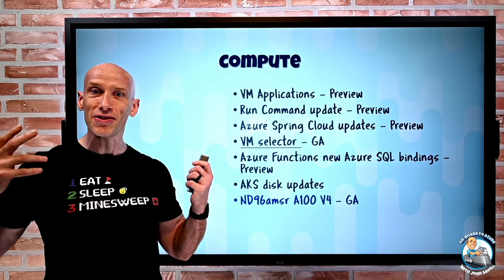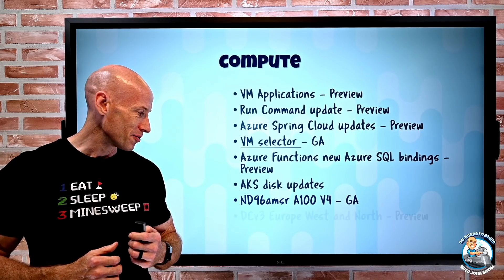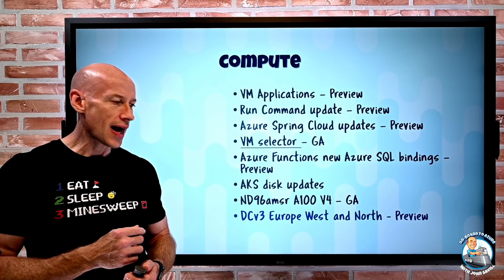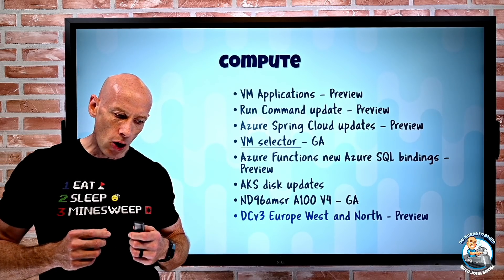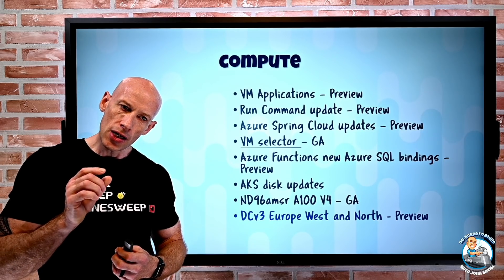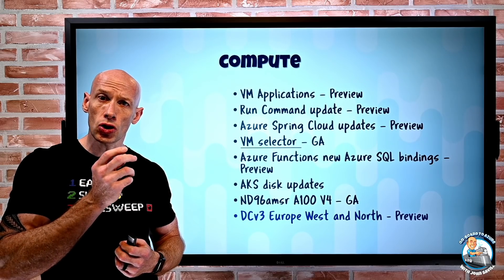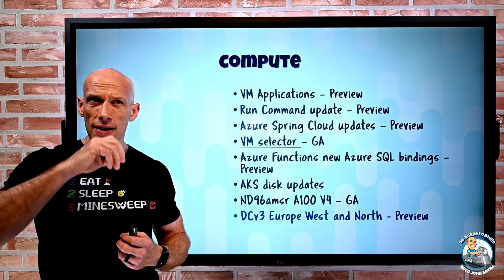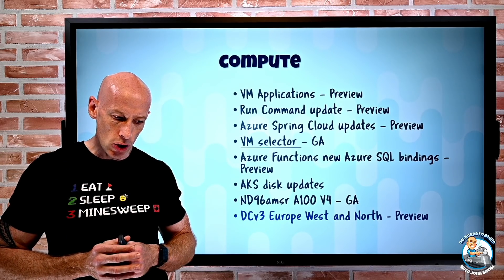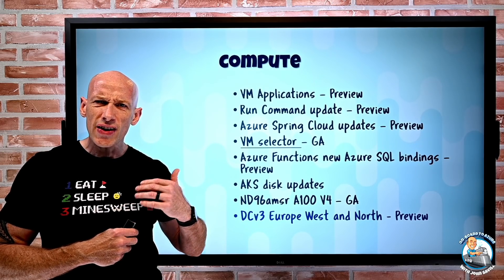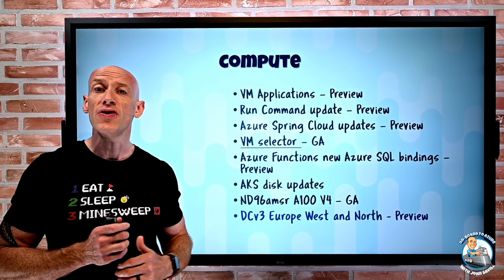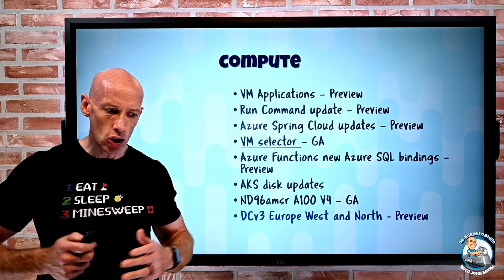These are available if you have really big AI workloads — I'm not going to demo that in my subscription, I could not afford it. The DC V3 is now available in Europe West and Europe North. The DC SKUs are the confidential computing SKUs using Intel SGX — those secure guard extensions — which give secure enclaves with encrypted memory you write your applications to use. The big deal about the V3s is a 1,500 times increase in encrypted memory, up to 256 gigabytes.